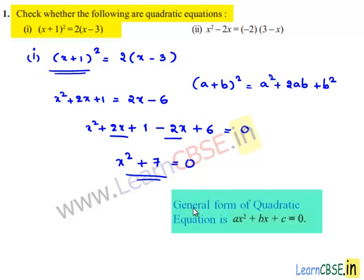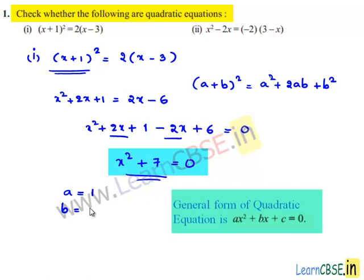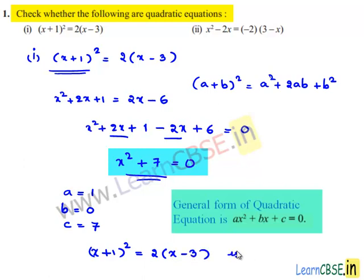We know that the general form of a quadratic equation is ax² + bx + c = 0. If we notice, this equation is of that form where a = 1, b = 0, and c = 7. So by comparing this equation with the standard equation, we can say that the given equation (x + 1)² = 2(x - 3) is a quadratic equation.